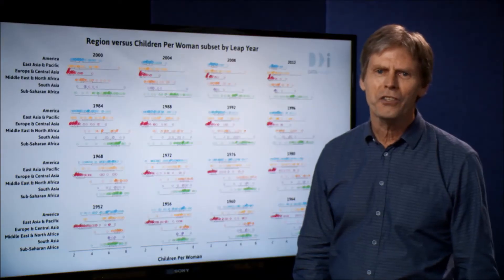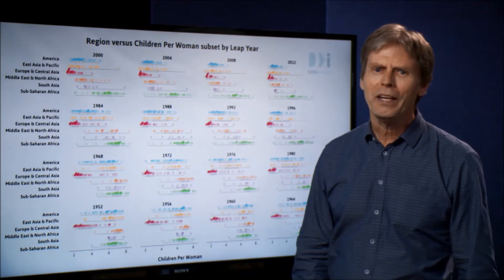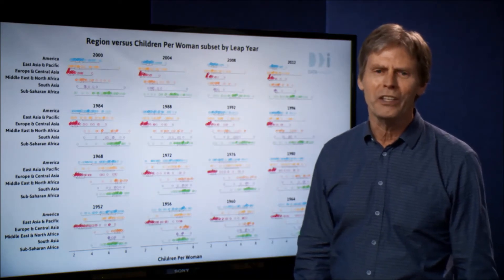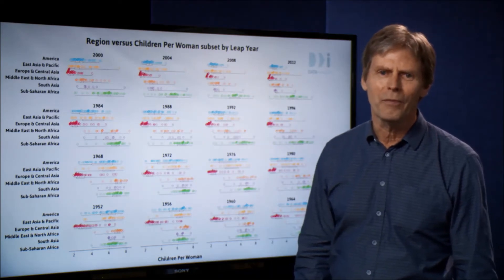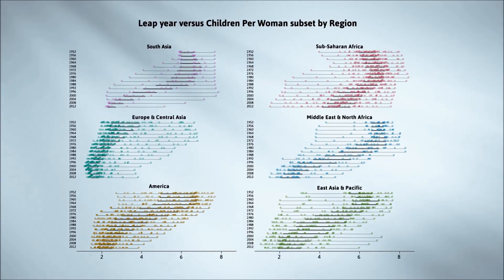When did all these changes in children per woman happen? Well, we can tell quite a bit if we reverse the roles of region and time. Here, I've set up my graphics so that we're looking at children per woman, broken out by a categorical version of year, and look at this separately for each region.